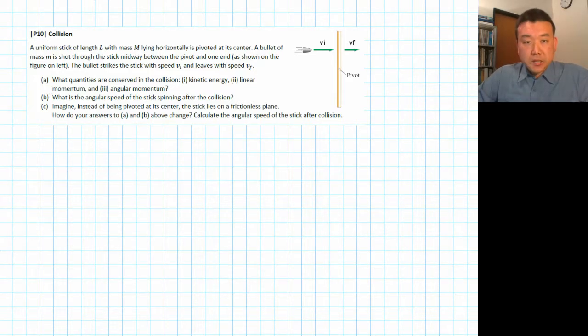Hi, this is the last of the videos on working out some rotation problems. So this question involves a collision. A bullet is going to come in, collides with this extended body, and go out at a different speed.